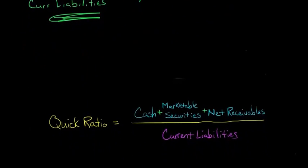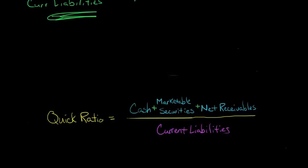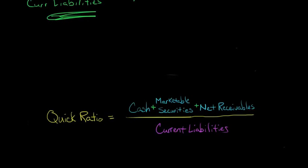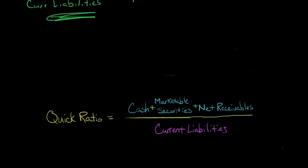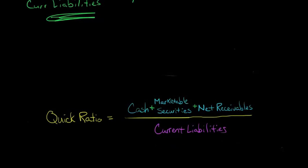So when we compute this quick ratio, we can think of it in terms of current assets minus inventory, or we can think about it like this, in terms of cash plus marketable securities plus net receivables. And then we just divide it the same way we did with the current ratio. We have the denominator as current liabilities, and this is going to yield the quick ratio.